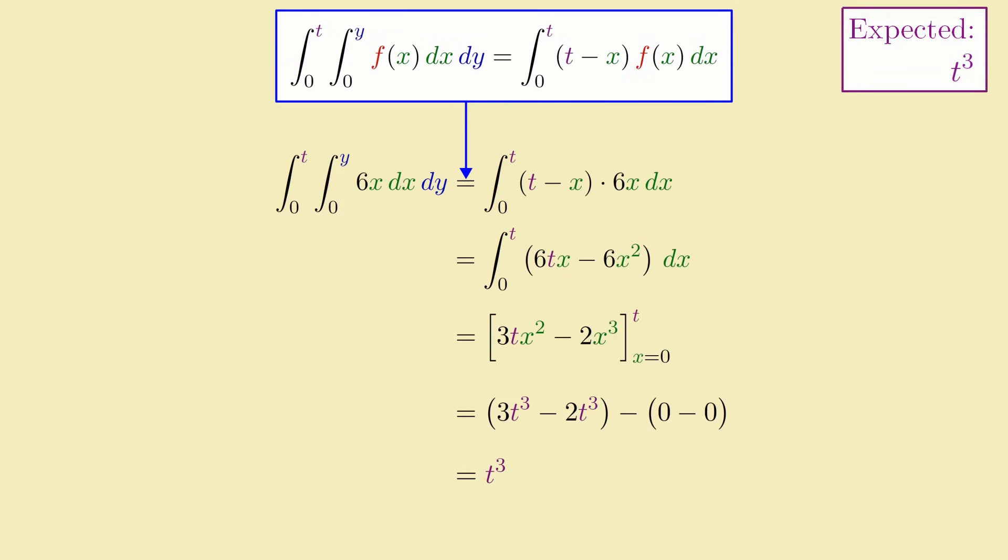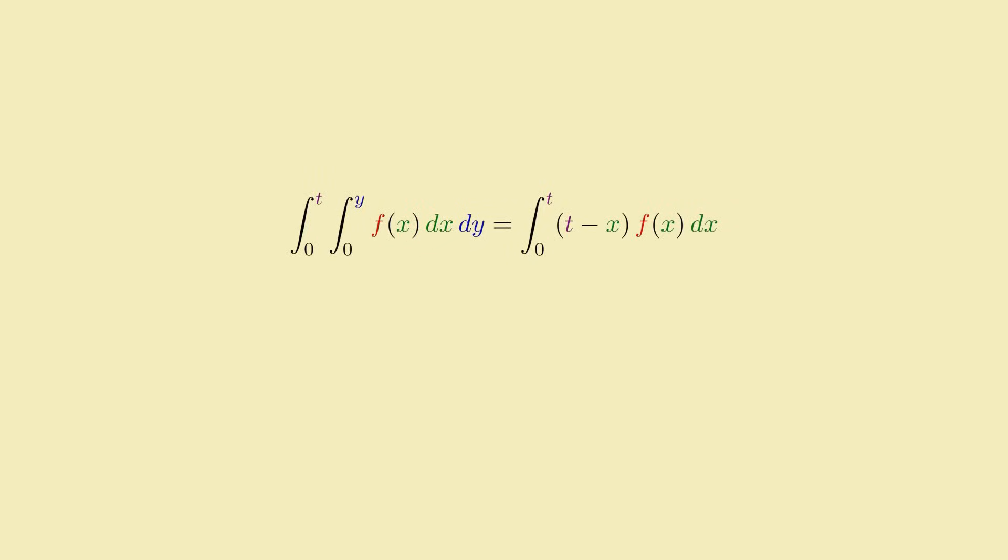Or, well, almost. If we're computing a general double antiderivative here, we actually have to tack on an arbitrary linear term to the final answer to account for the first integration constant itself getting integrated. But the salient part of the result is the t cubed part. Alright, so it seems to work. But something about this may still seem kind of fishy. Think about what this formula is doing.